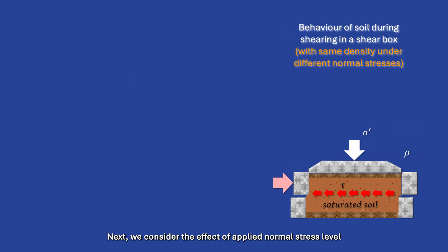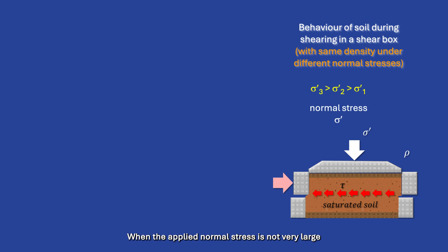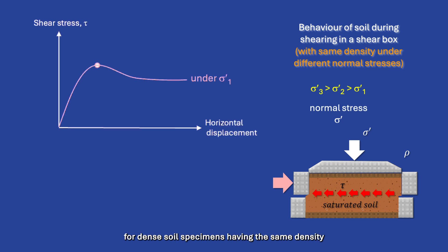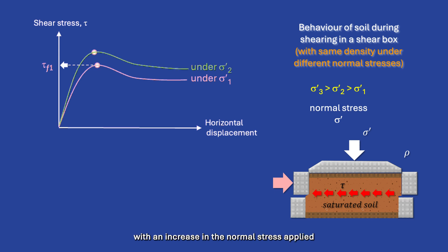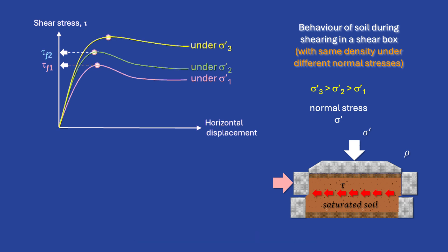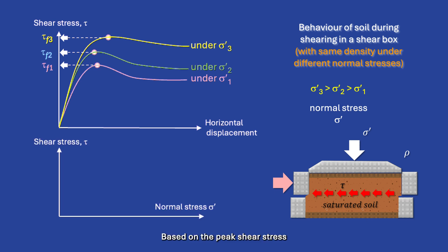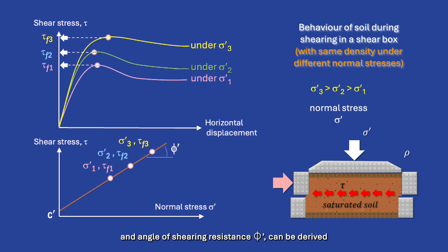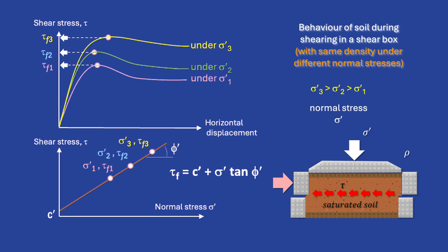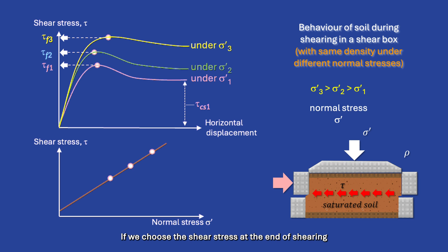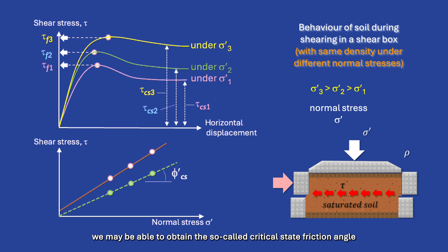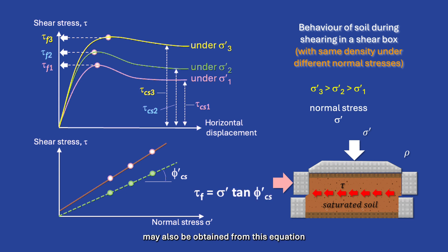Next, we consider the effect of applied normal stress level. When the applied normal stress is not very large, for dense soil specimens having the same density, the peak shear stress increases with an increase in normal stress applied. Based on the peak shear stress, a set of shear strength parameters — namely the apparent cohesion and angle of shearing resistance — can be derived, and the shear strength of the soil can then be estimated from the Mohr-Coulomb failure model. If we choose the shear stress at the end of shearing when the soil's volume is almost constant, we may obtain the so-called critical state friction angle.